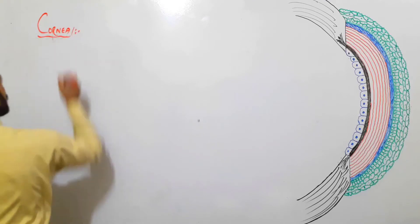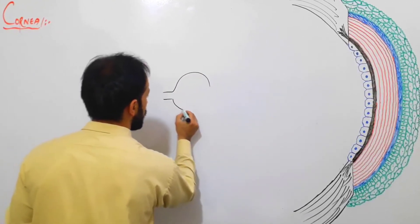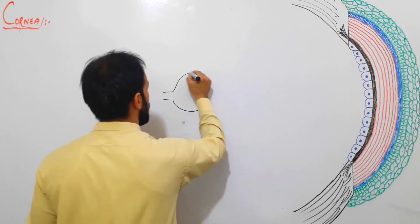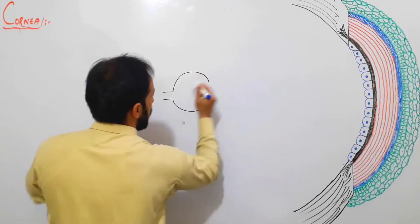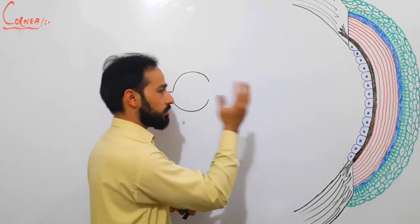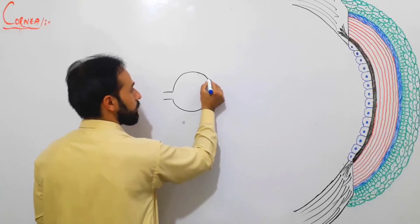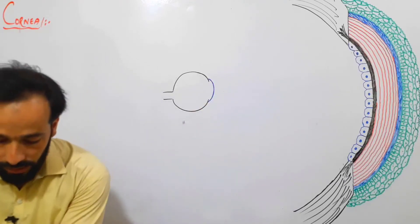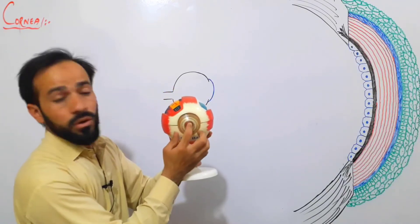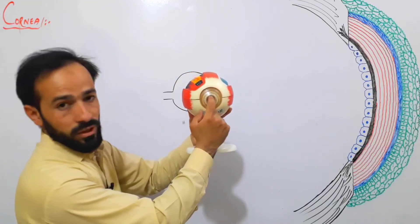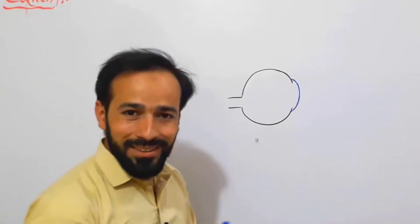What is the cornea? Let me draw a simple diagram. As I told you in the previous lecture, our eye is a globular structure — this is the sclera. Here we have an anterior bulging; if I am standing like this and you are looking from the lateral view, the anterior bulging of the eye is called the cornea.